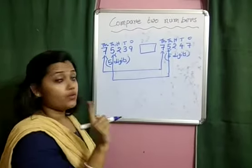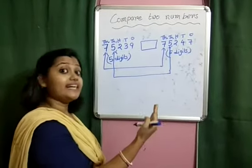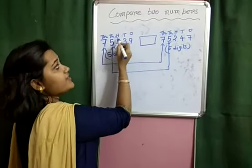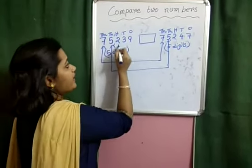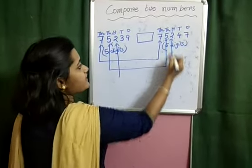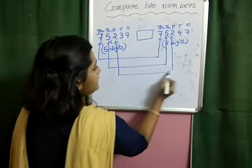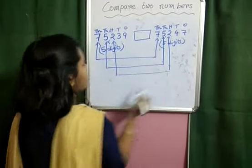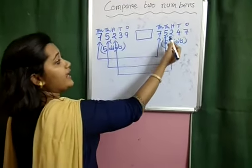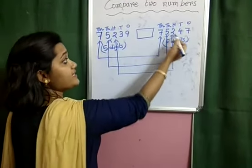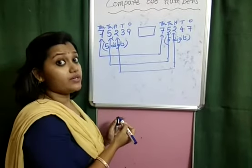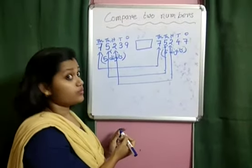Should we say the numbers are equal? No. We need to check the next highest place. The next highest place is 100. We need to check the 100s place of both numbers. In this case it is 2, and in this case also it is 2.